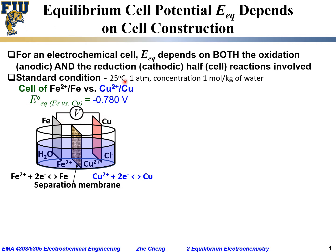Under standard conditions, the measured voltage for the iron electrode versus the copper electrode is minus 0.780 volt. That is the measured equilibrium potential for the iron electrode versus the copper electrode, which means the iron electrode is more negative than the copper electrode.